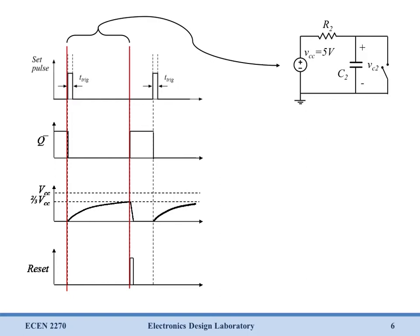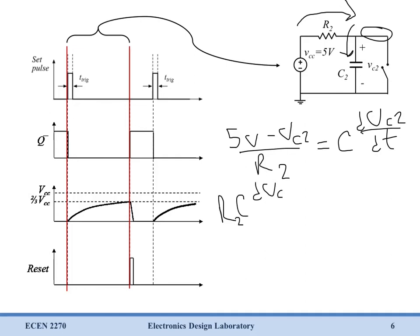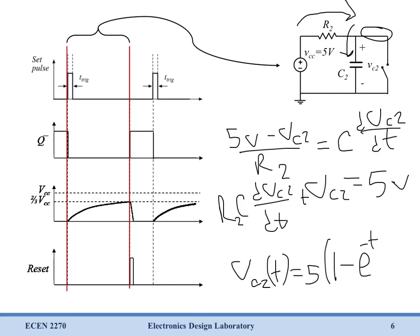So to start out solving this, we can write our node equations. And here we have one current coming in this way and a current leaving this way. We're solving for this voltage right here. So we'll get 5 volts minus Vc2 over R2. And this is going to equal C dVc2 dt. Now we can multiply through by R2 and rearrange. We're going to get R2C dVc2 dt plus Vc2 equals 5 volts. This equation is very similar to the one we got when solving for t-trigger. In fact, it's the same equation. And so we immediately know what the solution is going to be. We're going to end up with Vc2 of t equals 5 times 1 minus e to the minus t over R2C2. So that's our equation for Vc2.